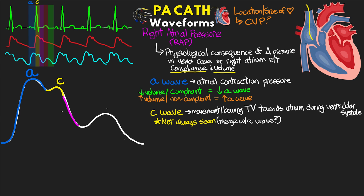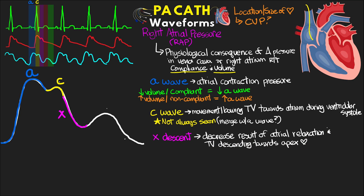Next in our waveform is what we call the X descent. This decrease in the pressure tracing is a result of atrial relaxation and the tricuspid valve descending back down towards the apex of the heart — returning from its bowed position back toward the atria — creating more room in the atrium. We're going to see this carry through the end of our QRS and as seen mid-systole on the arterial pressure tracing.